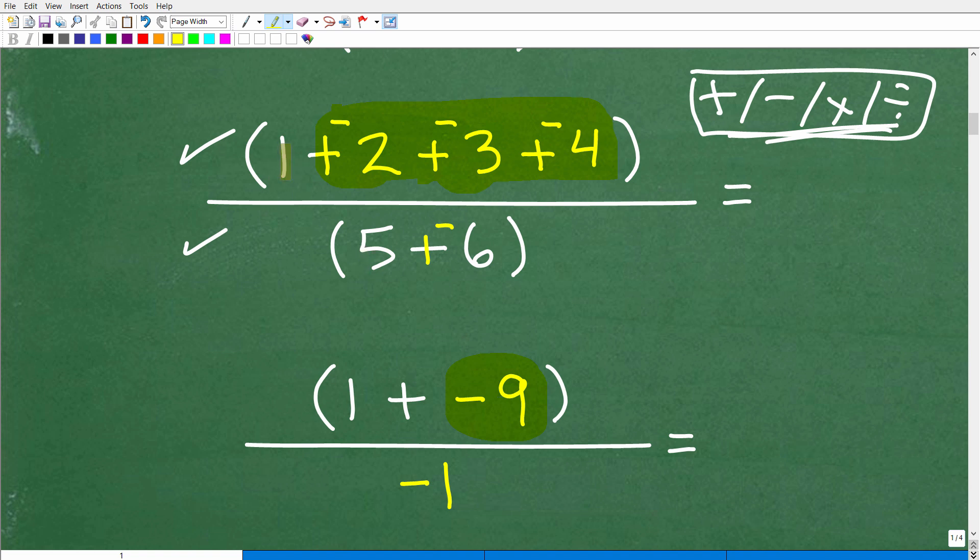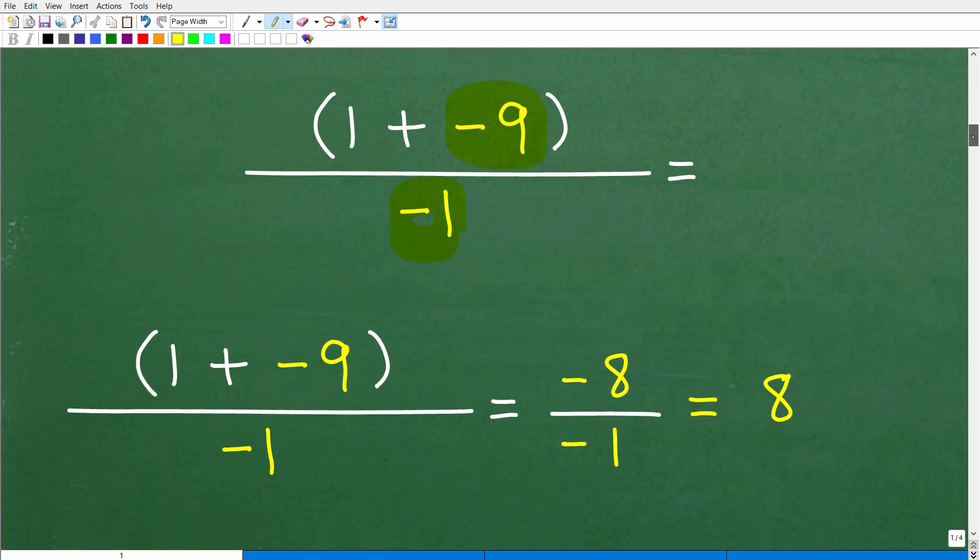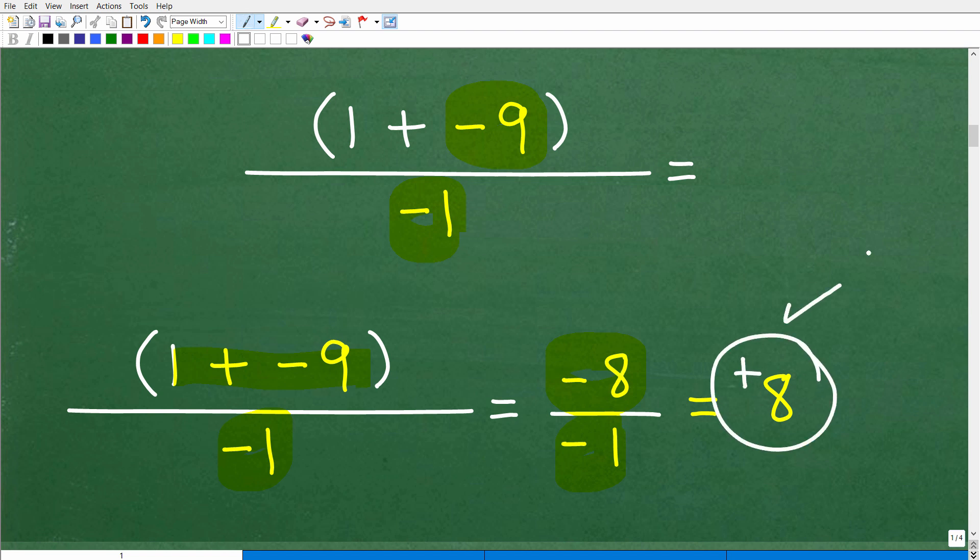Okay, so here we have 1 plus, this is all negative 9. Okay, so that's our numerator. And then 5 plus negative 6 is negative 1. All right, so now this is going to be very easy. 1 plus negative 9 is going to be equal to negative 8. Then I have this negative 1 in the denominator. So, a negative divided by a negative is a positive. So, we get a positive 8.